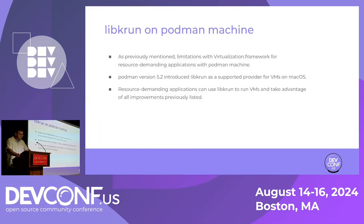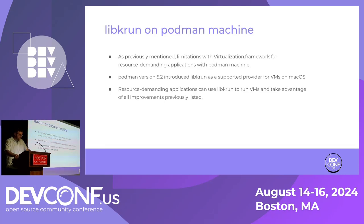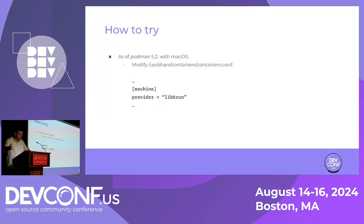With libkrun on Podman machine, we've seen the problems with virtualization framework, and for resource-demanding applications we need something different. As of version 5.2, Podman introduced libkrun as a supported provider for VMs on macOS. The Apple hypervisor is still the default, but you are able to configure the containers.conf file to run libkrun instead. To try it, it's very simple — you modify the containers.conf file on macOS, go to the machine subsection, change the provider from Apple HV to libkrun, and all the glue is in place in Podman to start using libkrun.